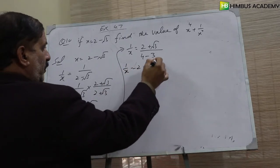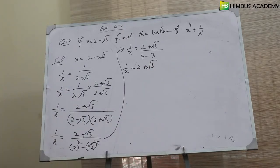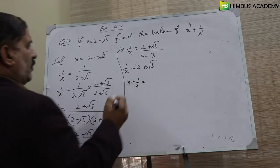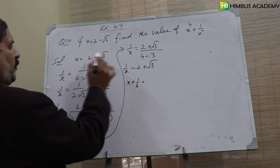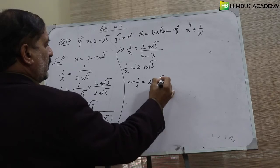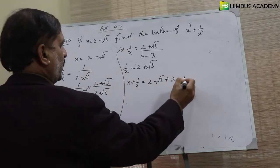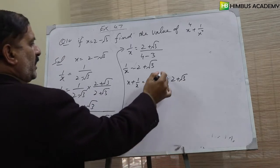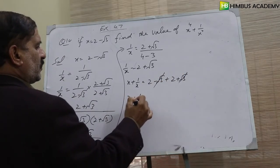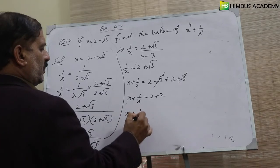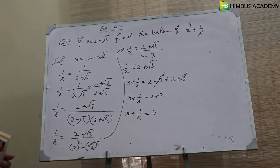2 plus square root 3 یہ ہمارا 1 over x ہو گیا۔ اب ہم x plus 1 over x معلوم کرتے ہیں: x کی جگہ 2 minus square root 3 اور 1 over x کی جگہ 2 plus square root 3 put کرتے ہیں۔ minus square root 3 اور plus square root 3 cancel ہو جاتے ہیں، تو x plus 1 over x is equal to 2 plus 2 is equal to 4۔